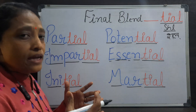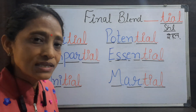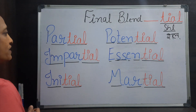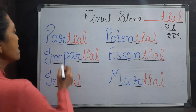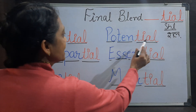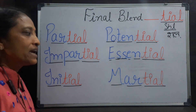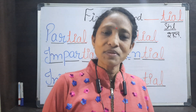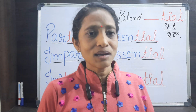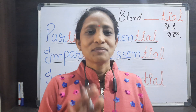This way, in whichever word's last sound has T-I-A-L, we can give it the 'shl' sound. The words are: Partial, Impartial, Initial, Potential, Essential, Martial — all T-I-A-L words. We give them the last sound of 'shl'. So read these words and practice them. We'll see you in the next video with the next blend. Until next time, bye!